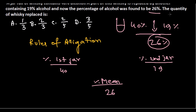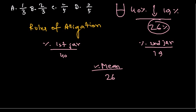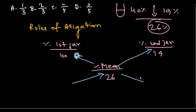We need to find the quantity which is replaced. From the allegation rule, applying the cross-difference method, we get 26 minus 19 equals 7 in one direction, and 40 minus 26 equals 14 in the other direction. So we get these two values: 7 and 14.